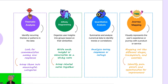The third one, quantitative analysis. In addition to qualitative data, you may also have quantitative data such as survey responses or ratings. Quantitative analysis involves summarizing and analyzing numerical data to identify trends or correlations, providing statistical insights into user preferences or behaviors. Number four, journey mapping, which visually represents the user's experience or journey with a product or service. By mapping out the different stages, touchpoints, and emotions users go through, we can identify pain points and opportunities for improvement.